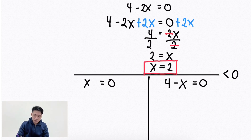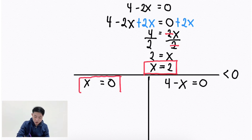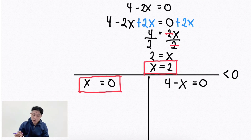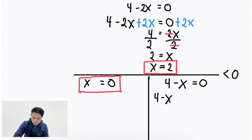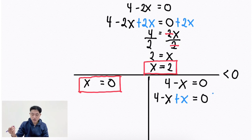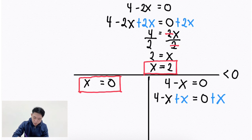For the denominator x alone, the final answer is x equals 0. Next, for 4 minus x equals 0, use the addition property of equality: 4 minus x plus x equals 0 plus x. Simplifying: 4 equals x.